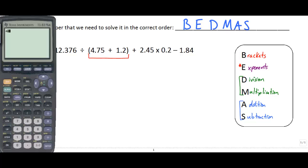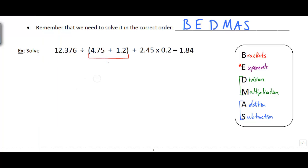I'm going to go ahead and do it on my calculator: 4.75 plus 1.2. Now to keep things simple, I'm going to write my answer down here: 5.95.